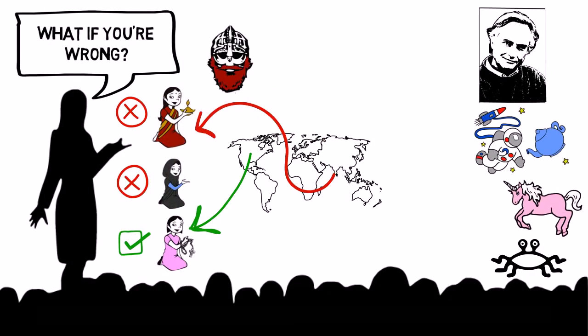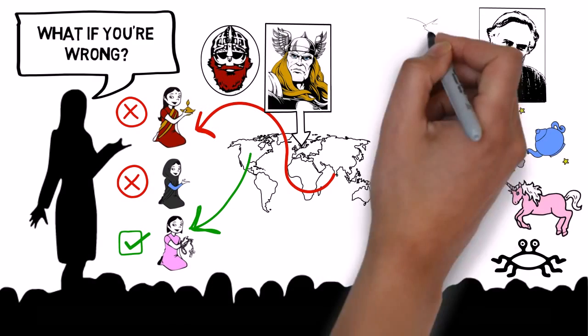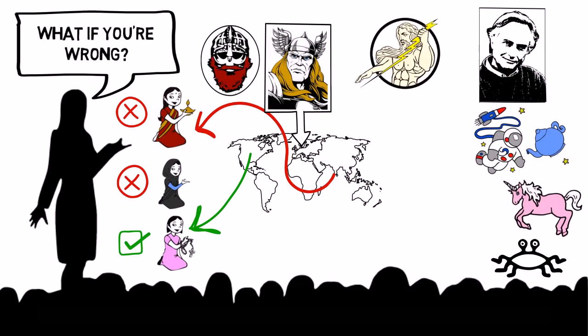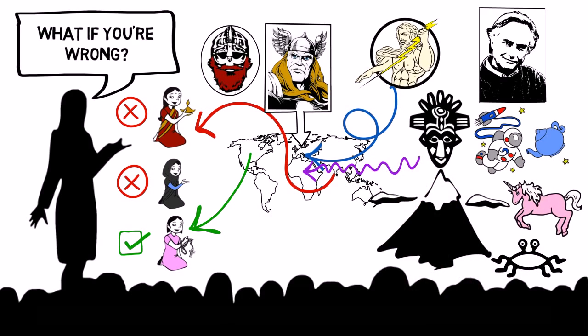If you were brought up in Denmark in the time of the Vikings, you'd be believing in Wotan and Thor. If you were brought up in classical Greece, you'd be believing in Zeus. If you were brought up in Central Africa, you'd be believing in the great juju up the mountain.